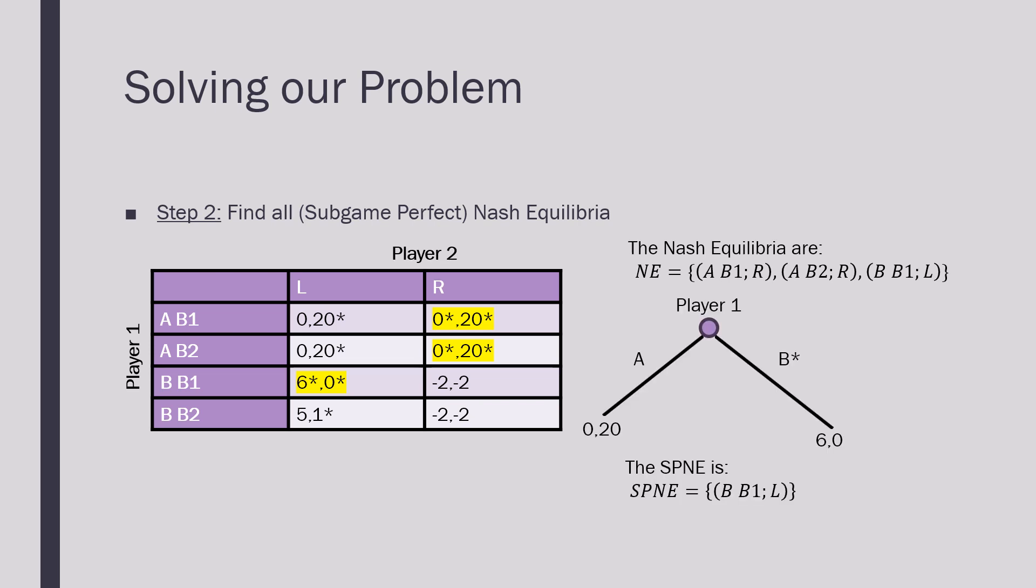Now the subgame perfect Nash equilibrium of this game is going to be just a single equilibrium where player one is playing B B1 and L. That is simply because if we backwards induct and roll the game tree backwards, we see that player one is going to get a higher payoff from entering into the simultaneous move game with player two than just ending it immediately.